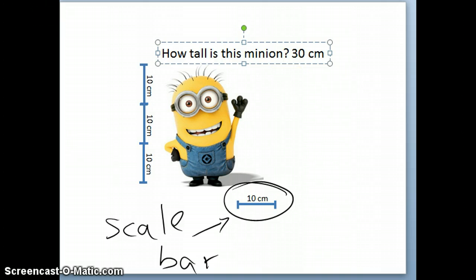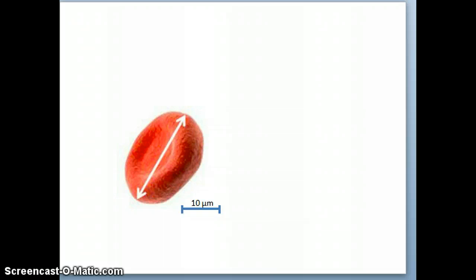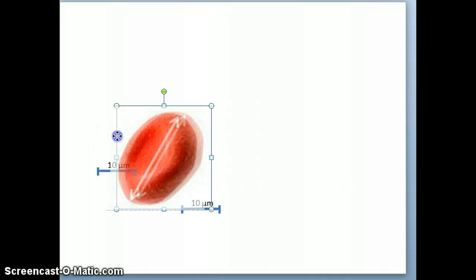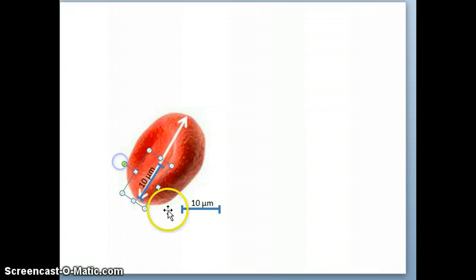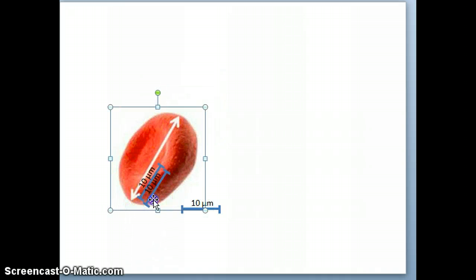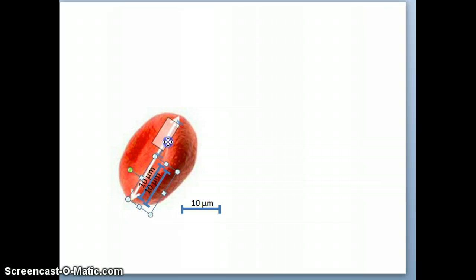But what happens if you get something more scientifically like this? They're asking how long is this red blood cell? And they give you a scale bar of around 10 micrometer here. You can use the same technique and say, okay, this is 10 micrometer. And I'm going to overlay it like this. But you can see pretty quickly that it's not going to be very accurate. Because you can move this thing around, but then it doesn't really fit. I mean, there's a little gap right here.